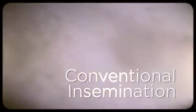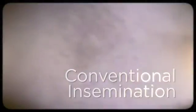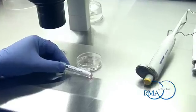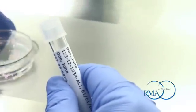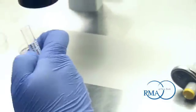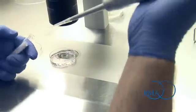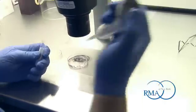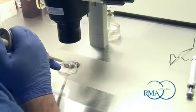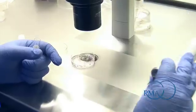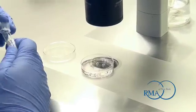If the sperm concentration and motility are deemed adequate, a conventional insemination is typically performed. A conventional insemination is when sperm are placed next to an egg and allowed to penetrate the egg on their own. Two embryologists witness the test tube containing the processed sperm specimen and the culture dish containing the eggs, verifying unique patient identification before a precise concentration of sperm is placed into each media drop. You can see a drop containing a few eggs just inseminated with thousands of sperm swimming around them, each trying to reach an egg.